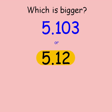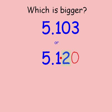Let me show you how we really work out which one is bigger. The first thing I'm going to do is make the numbers both have the same number of digits, so I'm going to put a zero on the end here. I can see that they both have 5 units and both have one tenth. This number here has no hundredths, but this number has two hundredths, so this one must be bigger. This is why 5.12 is bigger than 5.103.